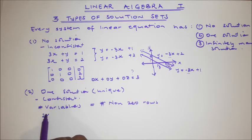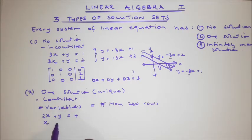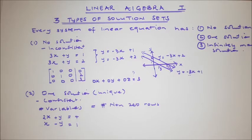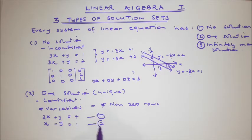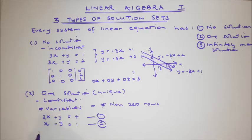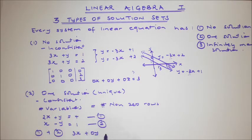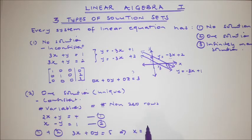So let's have an example: 2x plus y equals 4, and x minus y equals 1. This should remind you of simultaneous equations from high school. This is equation one and this is equation two. Let's solve by elimination: equation one plus equation two gives 3x equals 5, so x equals 5 over 3.